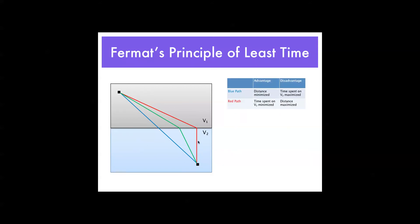The justification behind the blue path is that distance is minimized. They think the shortest path is the path of least time. The justification behind the red path is that time spent on V2, this is the slower side, is minimized. Now, this is the slower side because this is snow and this is pavement.